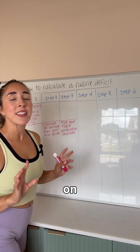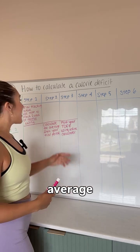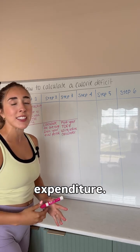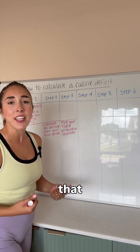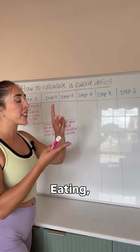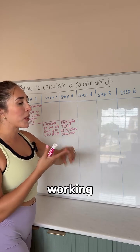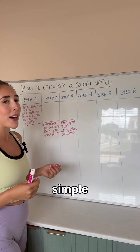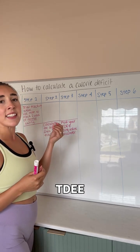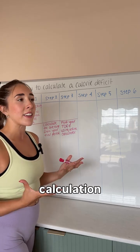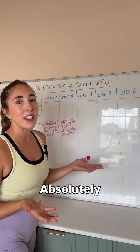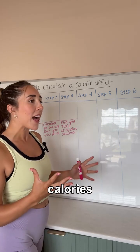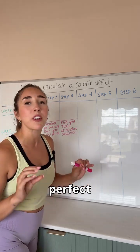Step number three, which can be done on the same day that you find that average, is gonna be finding your TDEE — Total Daily Energy Expenditure — the amount of calories that you burn throughout the whole day: eating, sleeping, farting, burping, fidgeting, working out, all the things. You can use a simple online calculator at tdeecalculator.net. Is the calculation gonna be perfect? Absolutely not — no calculator's gonna perfectly tell our very complicated body exactly how many calories it burns every day. But it's a perfect place to start.